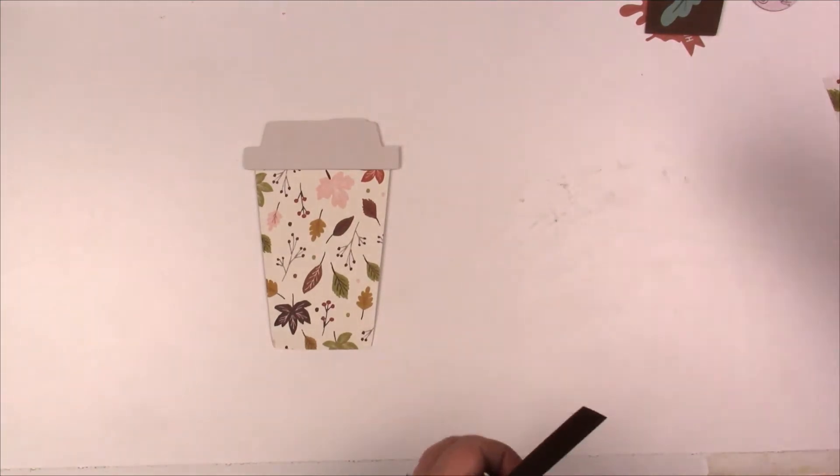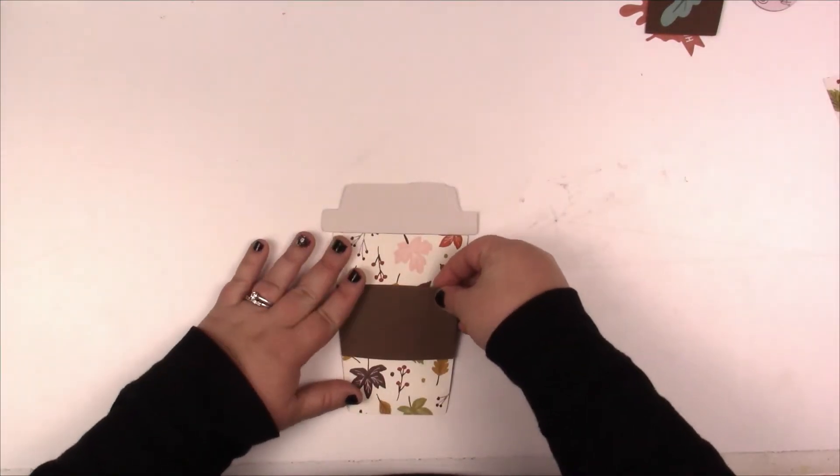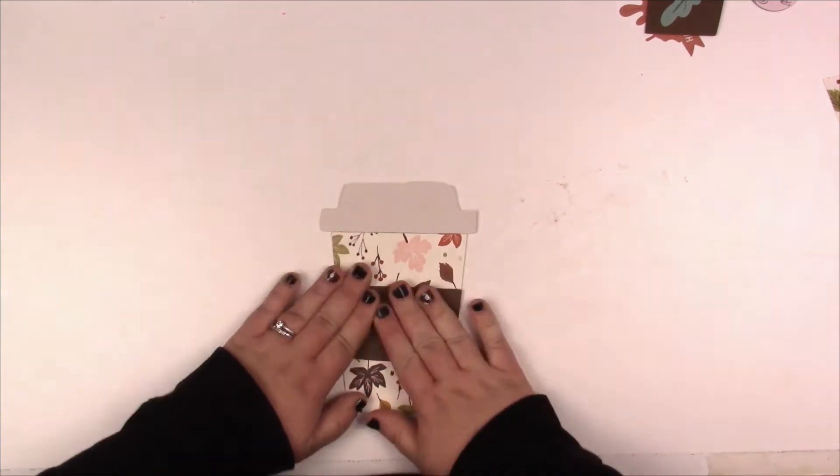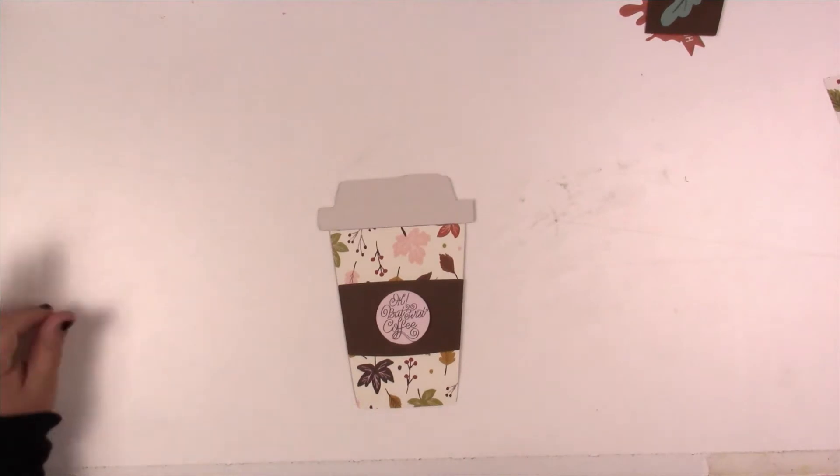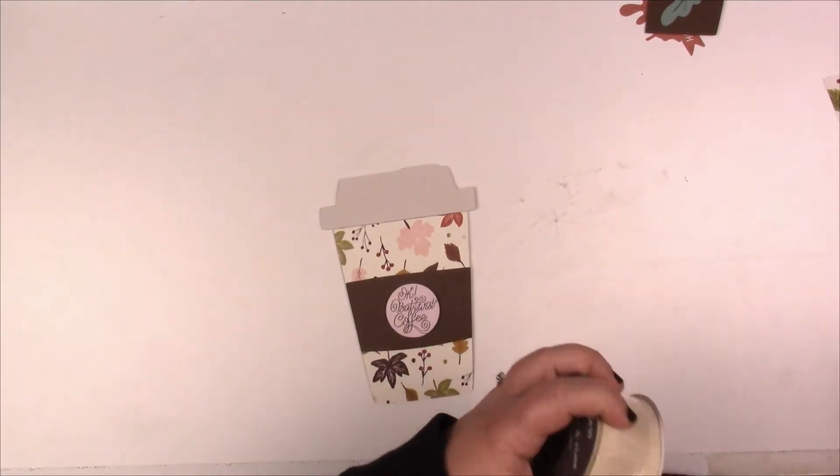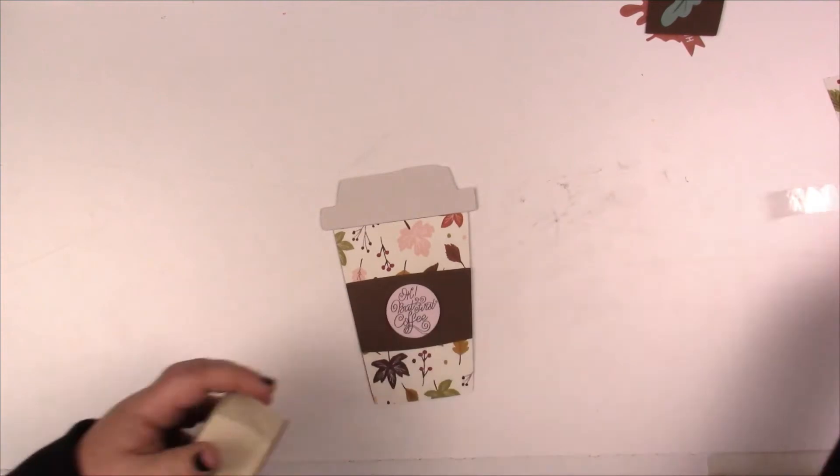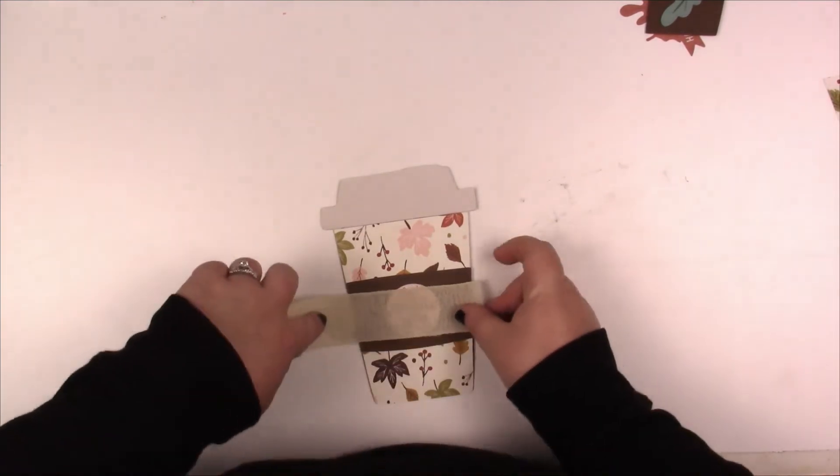This is the koozie or cup holder—there's one for either side. I added to the front this cute little button that says 'Okay but first coffee.' He's drinking hot chocolate, but still it's really cute, very fitting, and the colors match with the pink and the flowers.